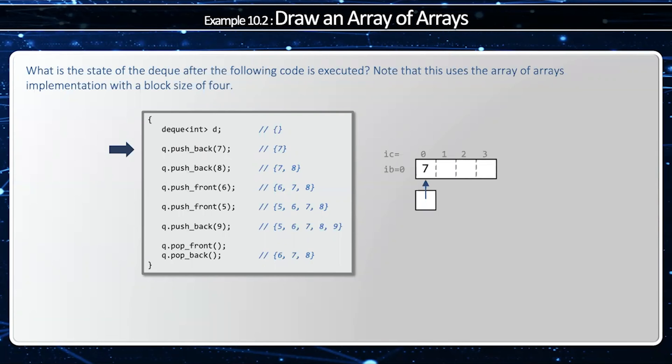Notice how array index is 0, block index is 0, cell index is 0, and deque index is 0. When I say push back 8, well, I have plenty of space after 7, so I'm just going to add 8.